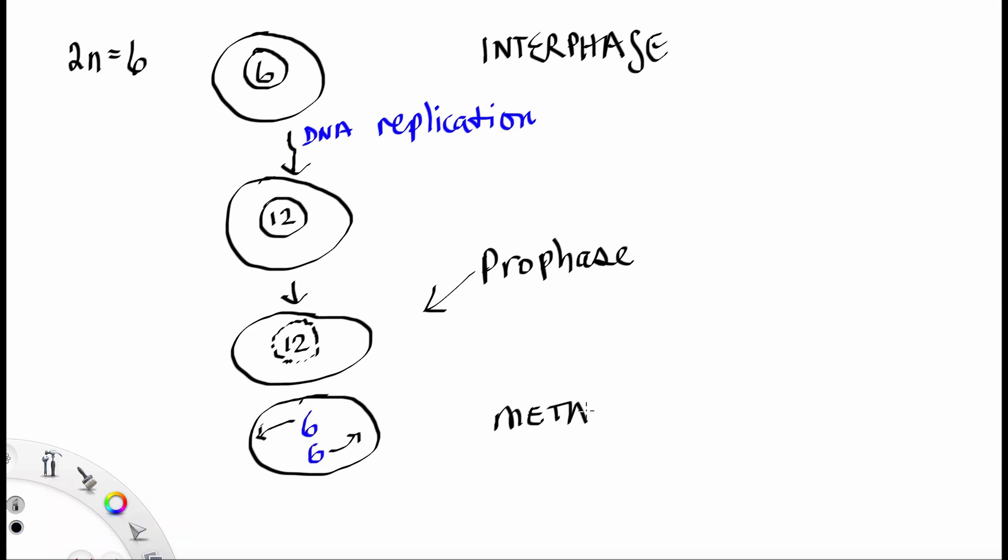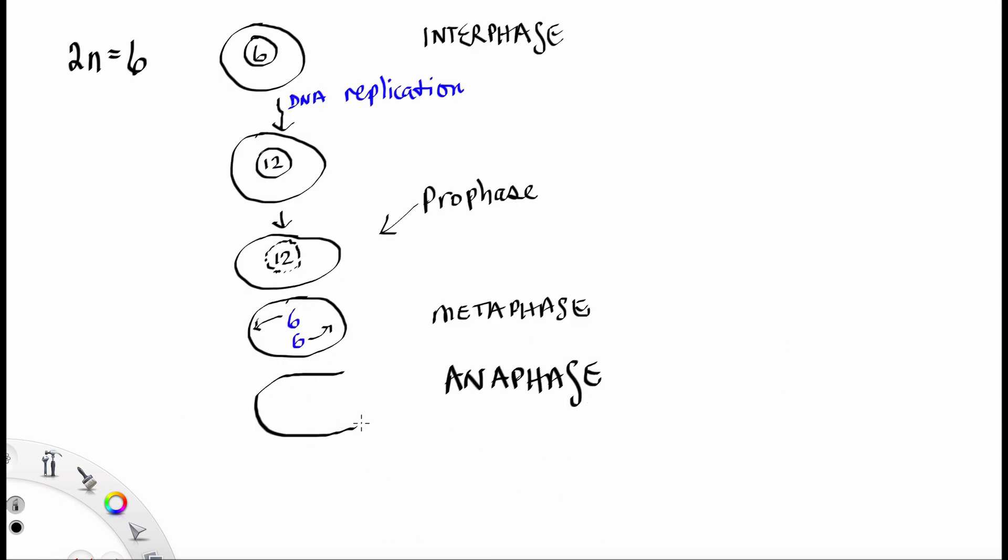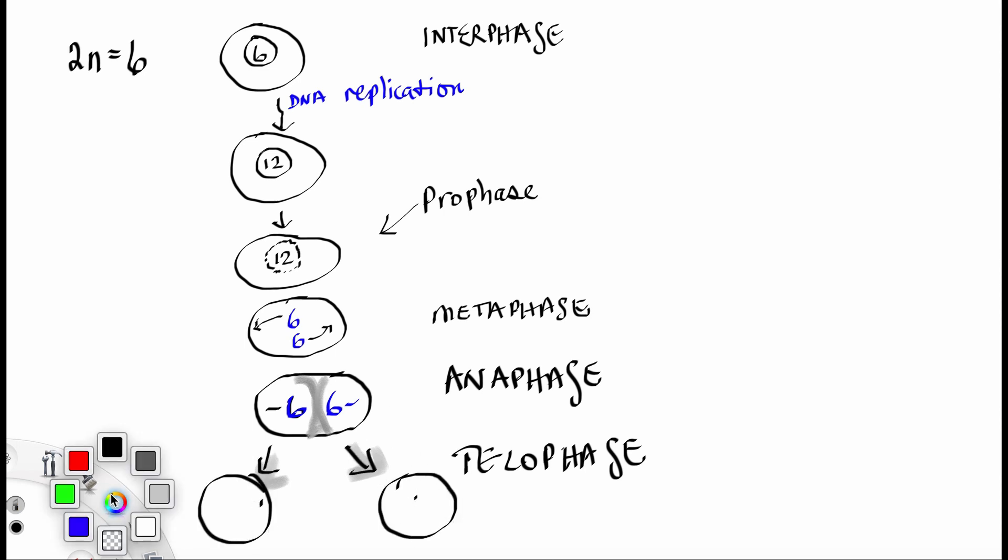Then we have prophase, and then we have metaphase. Finally, we have anaphase, where things really begin to separate. And then we get telophase, where 2 identical daughter cells are made, each with 6 chromatids.